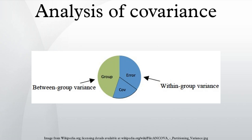Uses of ANCOVA: Increase Power. ANCOVA can be used to increase statistical power by reducing the within-group error variance. In order to understand this, it is necessary to understand the test used to evaluate differences between groups — the F-test.